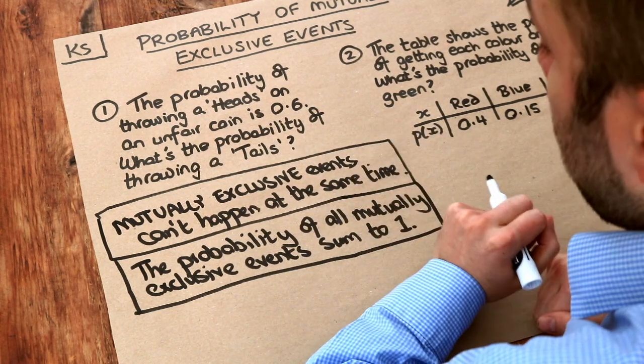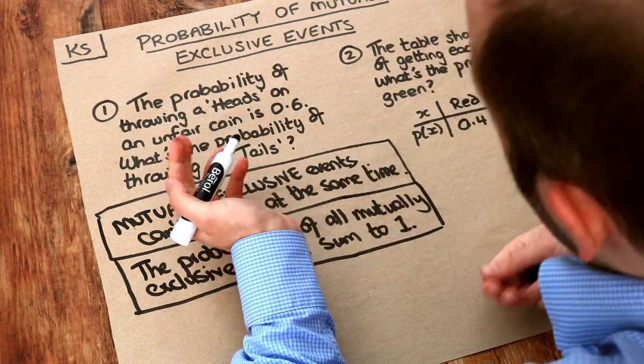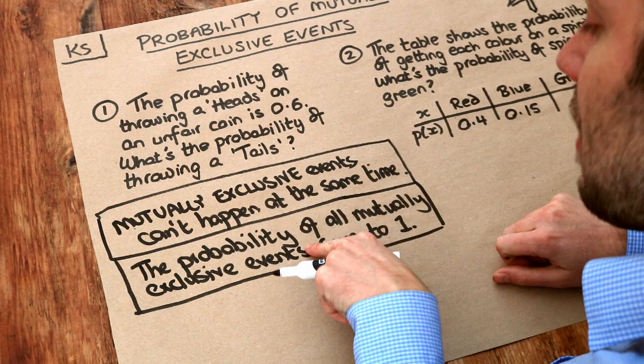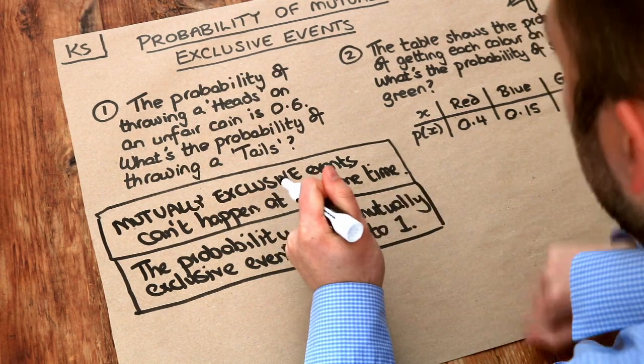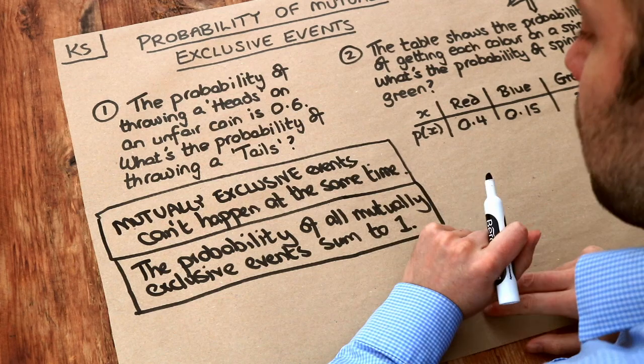So if I throw a coin, what are all the things that could happen? Well I could throw a heads or I could throw a tails. And what this is saying is that the probability of throwing heads and the probability of throwing tails has to add up to one.